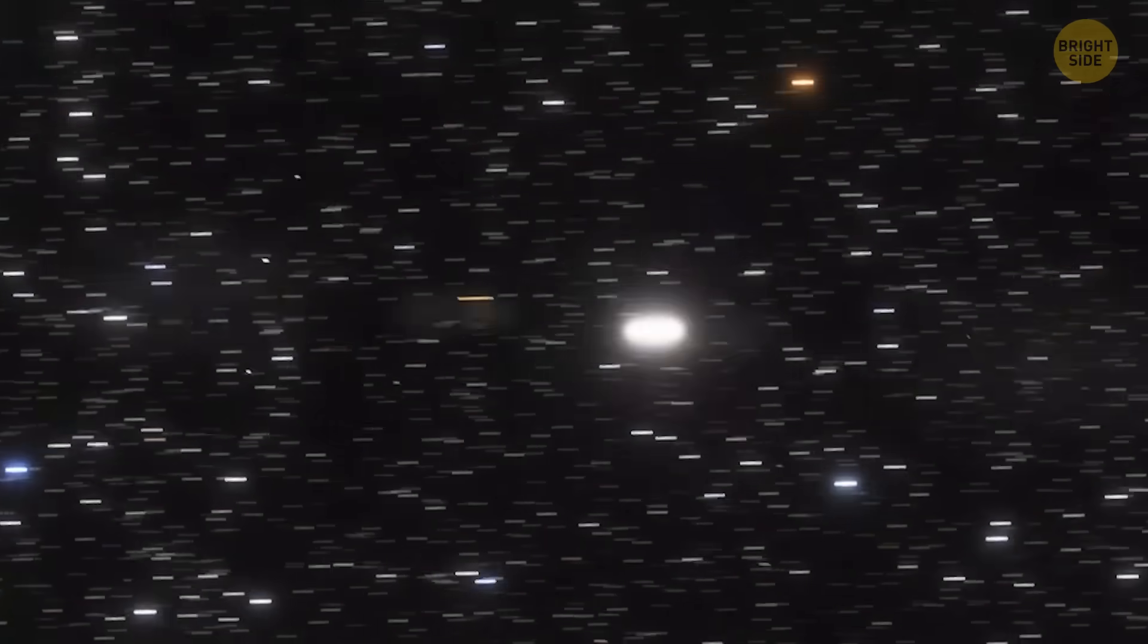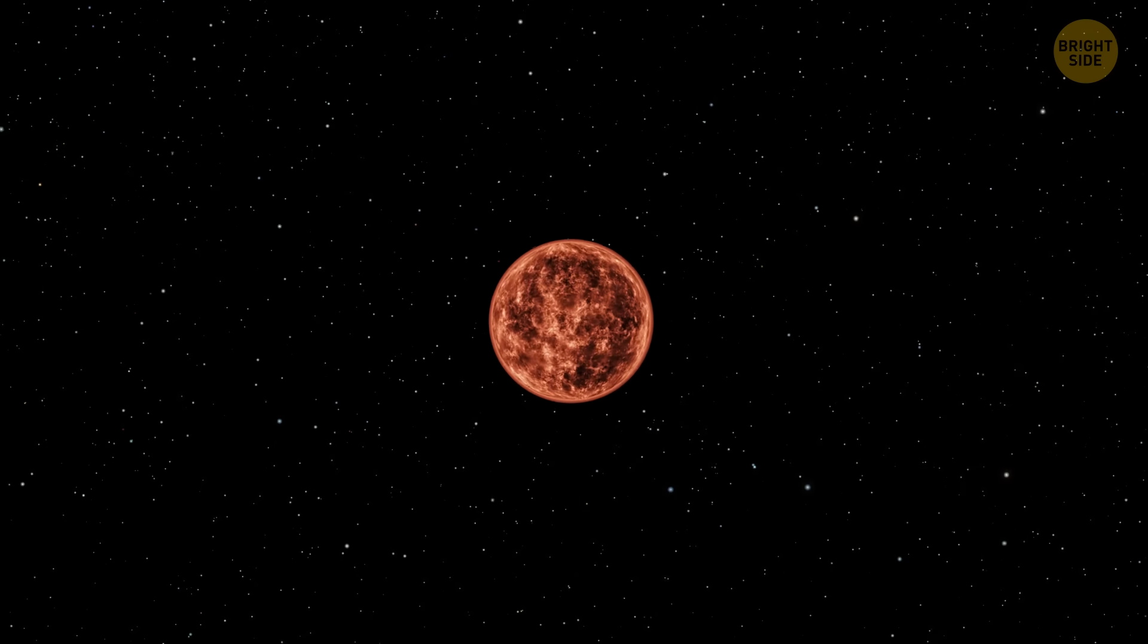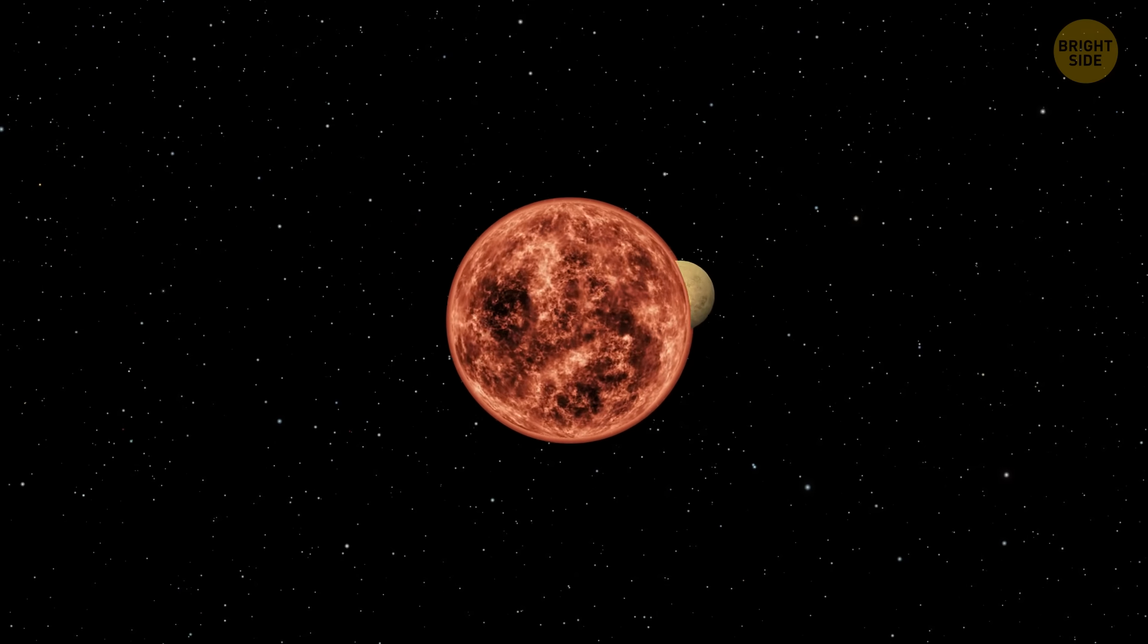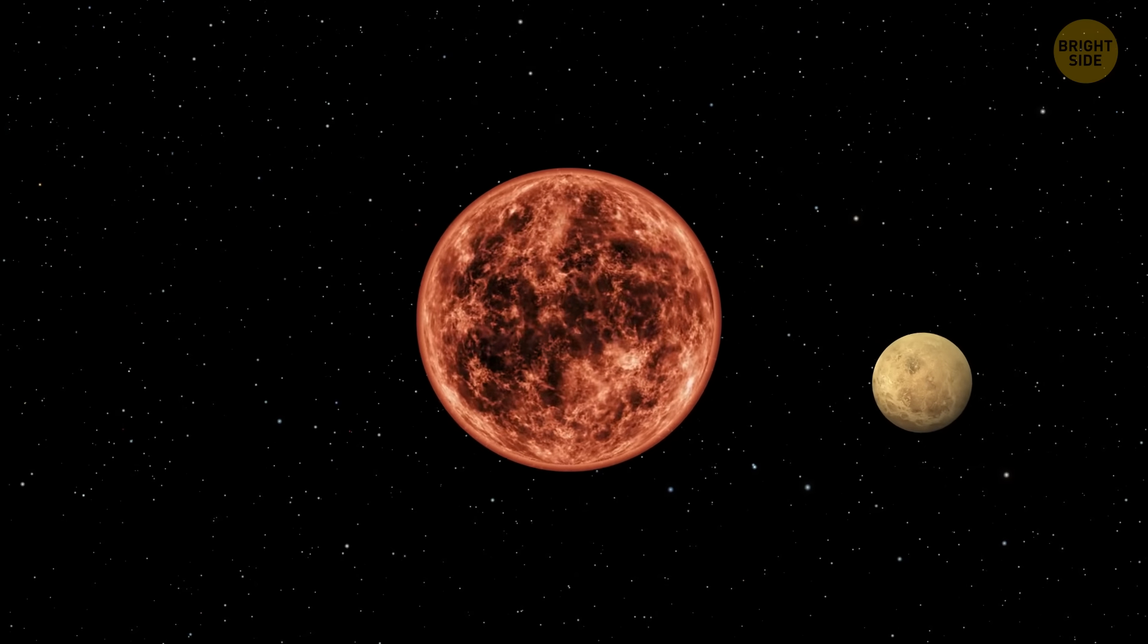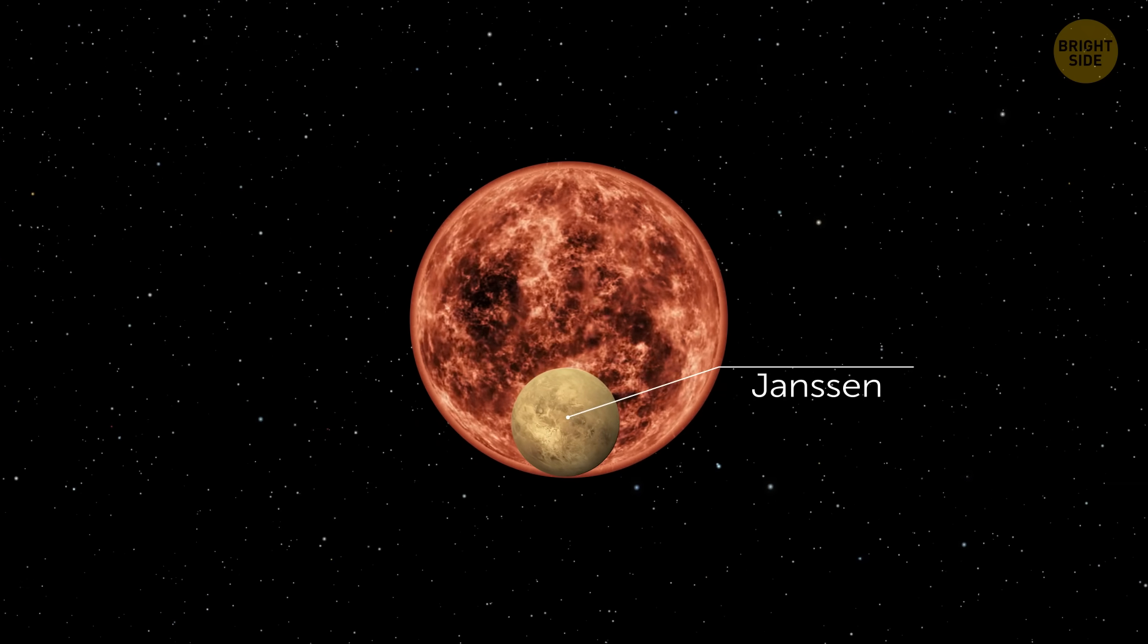Meanwhile, we're heading further to the binary star system 55 Cancri. It lies 41 light-years away from Earth and hosts an amazing planet, 55 Cancri e, also known as Janssen.